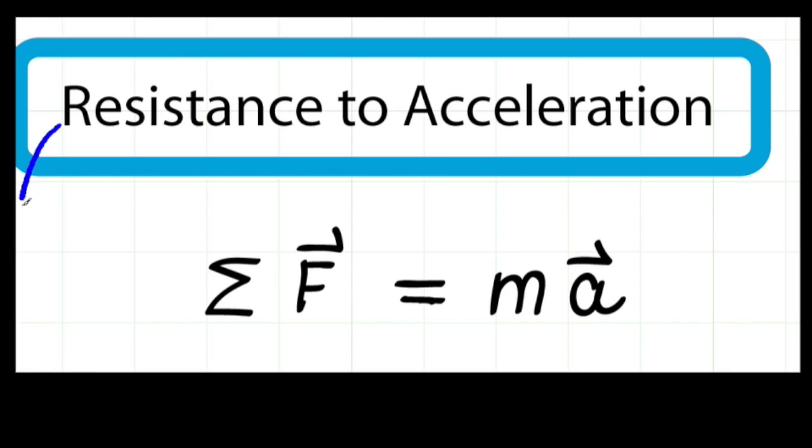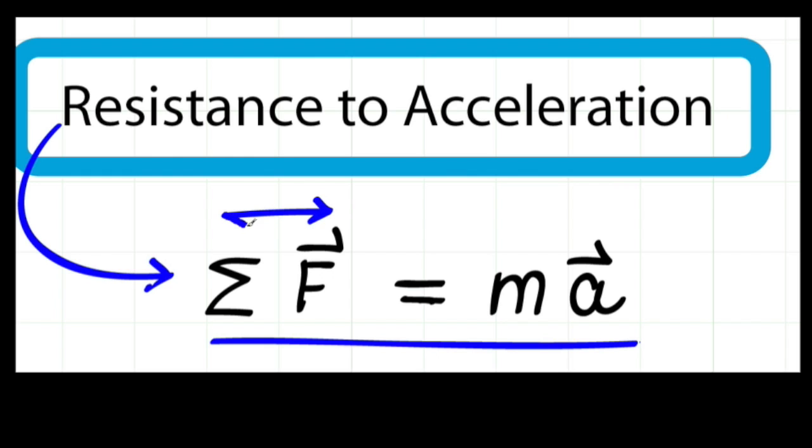To understand this idea, I've written Newton's second law of motion. So the idea here, if we hold force constant, which I'll symbolize with this arrow, and if we increase the mass of a body, the acceleration must go down. We've added more resistance to acceleration. And we'll build on this idea in a later lesson.